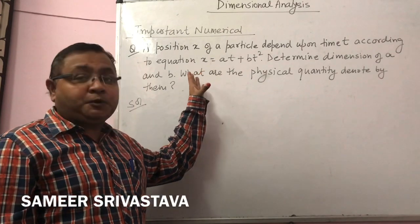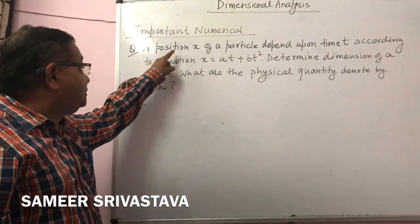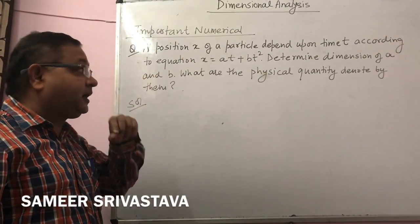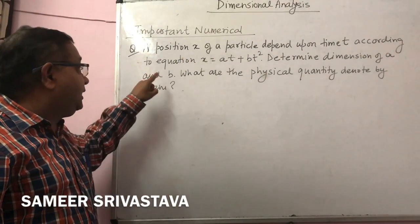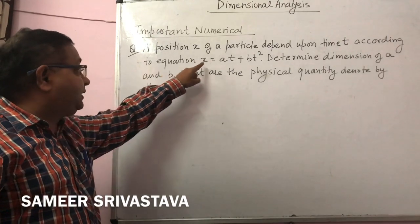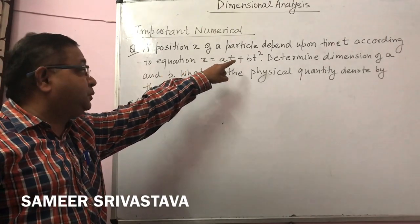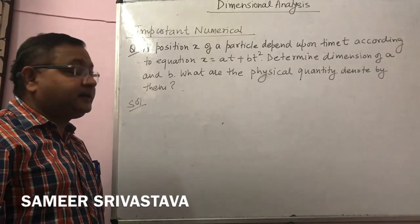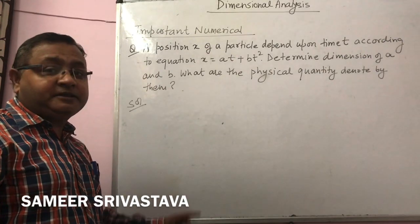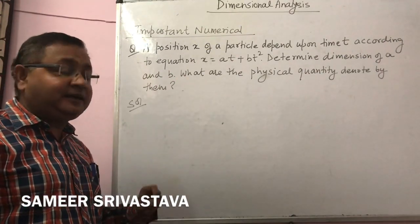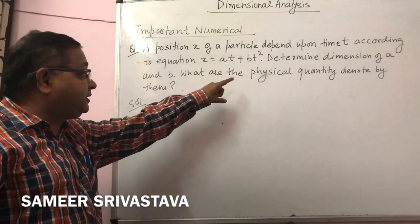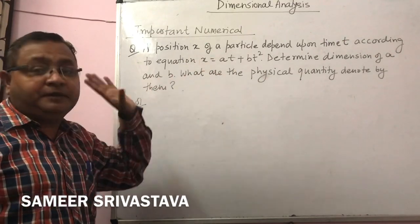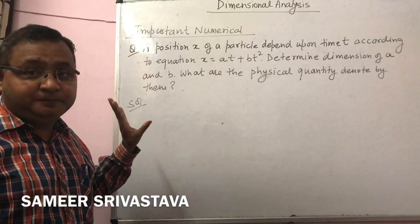The first problem is: a position x of a particle depends on time according to the equation x = at + bt². We have to determine the dimensions of a and b, as well as what physical quantities are denoted by a and b.